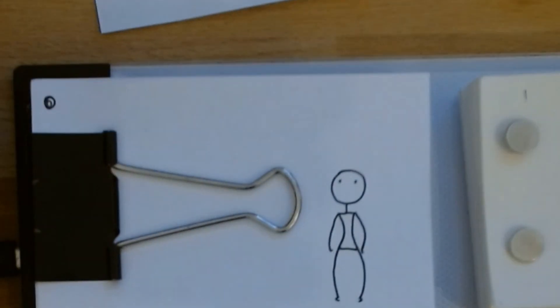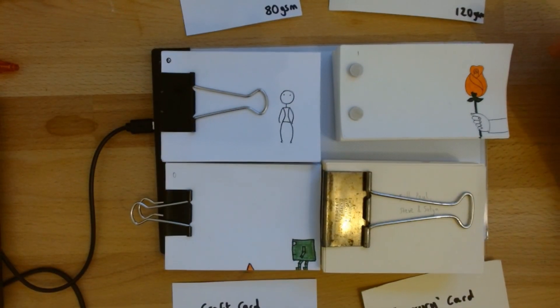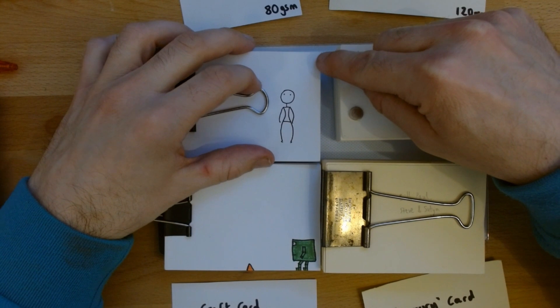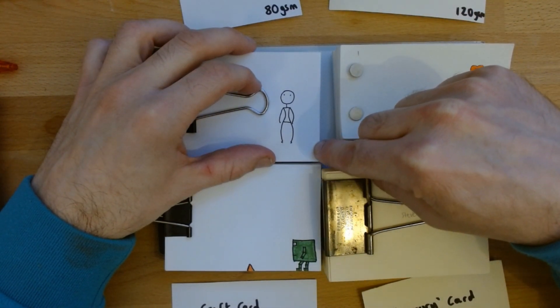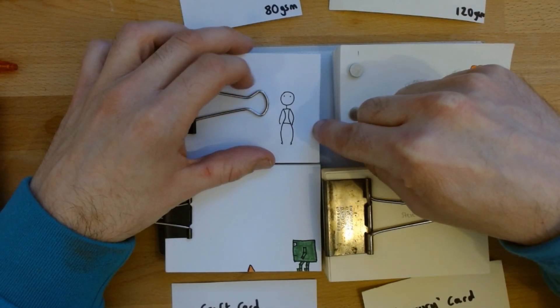So that gives the flipbook paper the advantage over the other three. Now what I would say is, if you are cutting it, make sure that the edge that your thumb is flicking through is the factory cut edge.